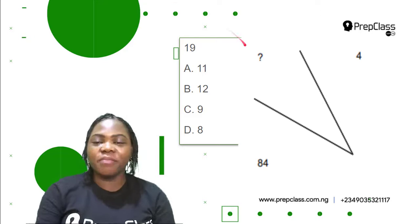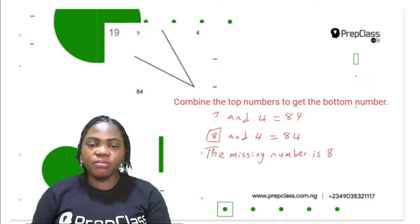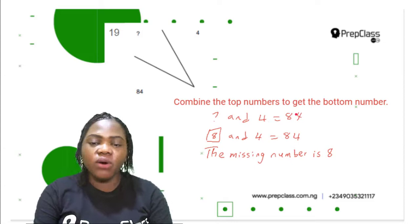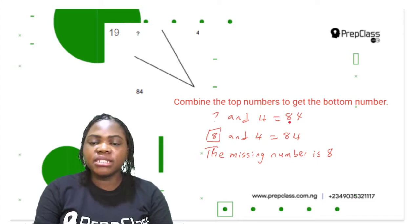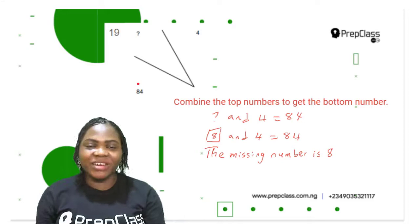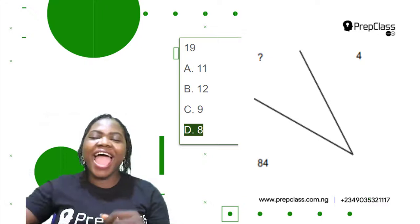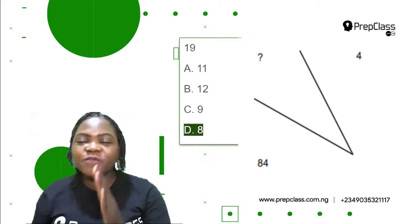Number 19: one of the top numbers is missing, the second top number is given as 4, and the bottom number is 84. Combine the two top numbers to get the bottom number. The 4 is already there, so what number combined with 4 gives 84? The missing number is 8 — 8 and 4 combined gives 84. The options: A is 11, wrong; B is 12, wrong; C is 9, wrong; D is 8, correct! 8 and 4 combined gives 84.